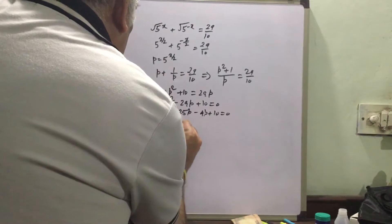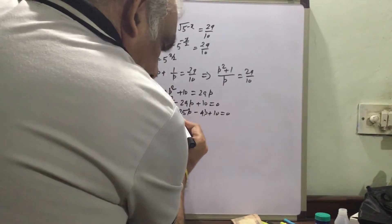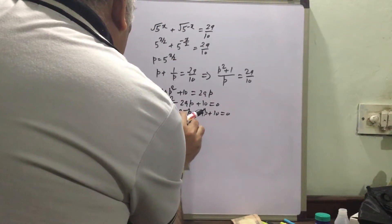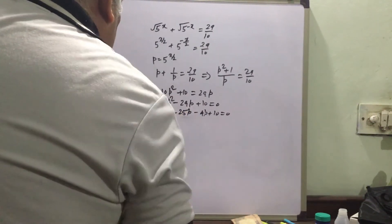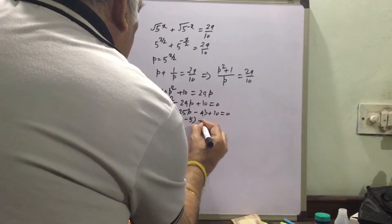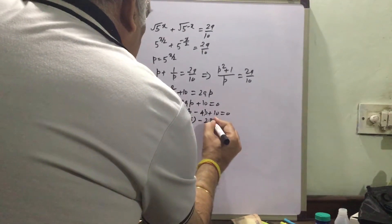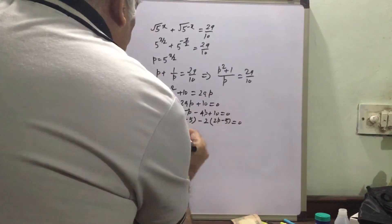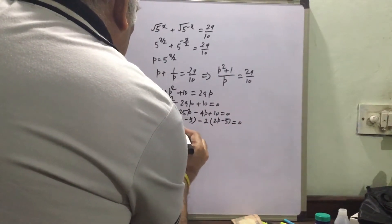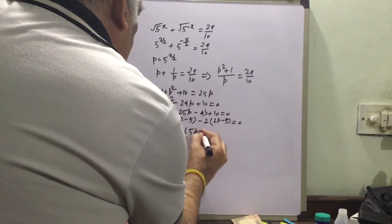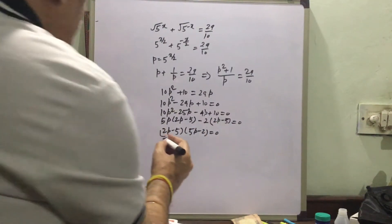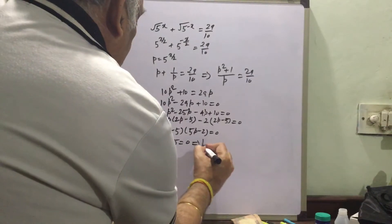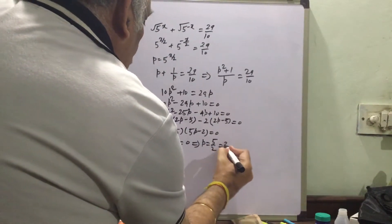Taking 5p as common from the first two terms gives (5p plus ... ), and from the last two terms we get (2p minus 5) as a common factor. So we write: (2p minus 5)(5p minus 2) equal to 0. Setting 2p minus 5 equal to 0 gives p equal to 5 by 2, which equals 2.5.